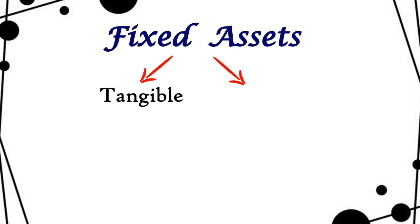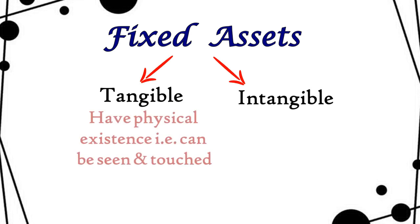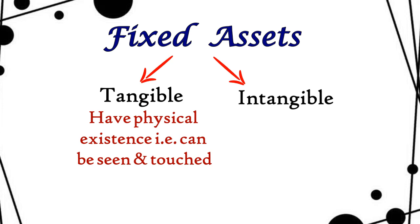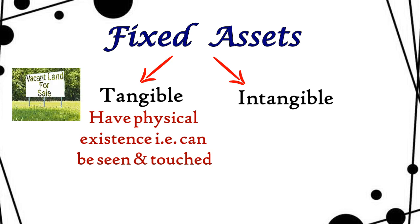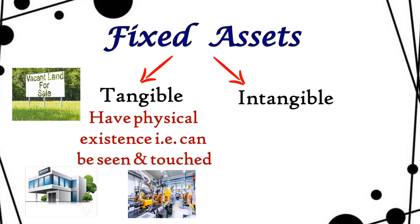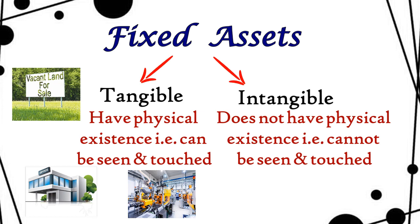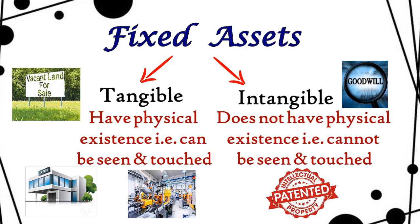Fixed assets are further divided into tangible assets and intangible assets. Tangible assets are those which you can see and touch — those with a physical existence, like land, building, and machinery. Intangible assets are those which you cannot see or touch, but are still valuable resources for the business — like patents and software.